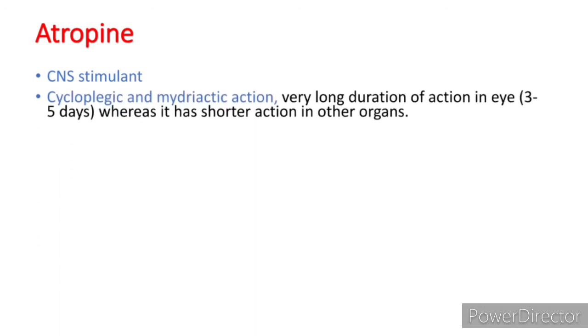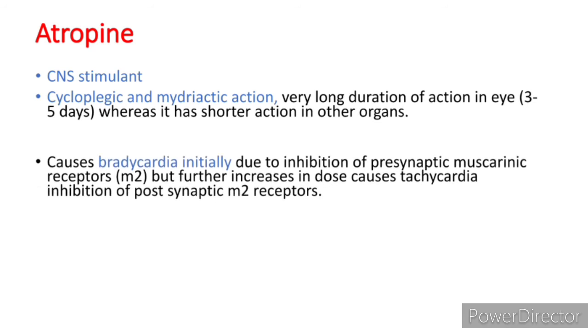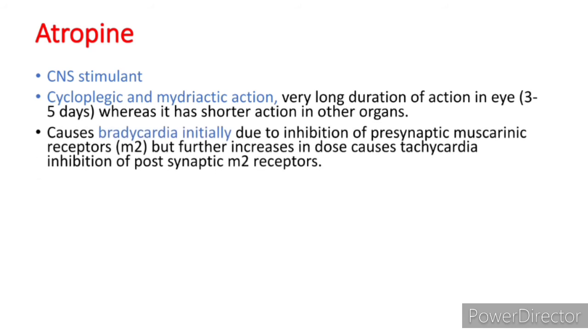Everything about atropine is highly important — note it carefully. Atropine is a CNS stimulant. It has cycloplegic and mydriatic action with a very long duration of action in the eye but shorter action in other organs. Atropine initially causes bradycardia at low doses, but as the dose increases, it causes tachycardia.